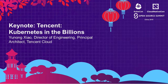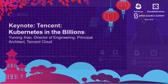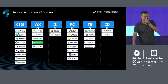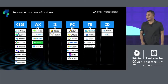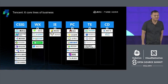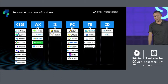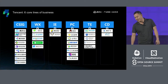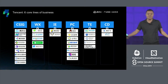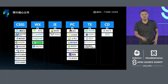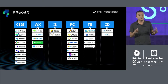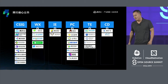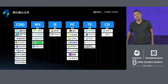Good morning. Hope everyone's having a good time. So imagine you're this company, right? You've got six broad lines of business, ranging everywhere from social media with WeChat, which everyone has in their pockets, to gaming, which everyone's playing at home, to cloud, to advertisement.